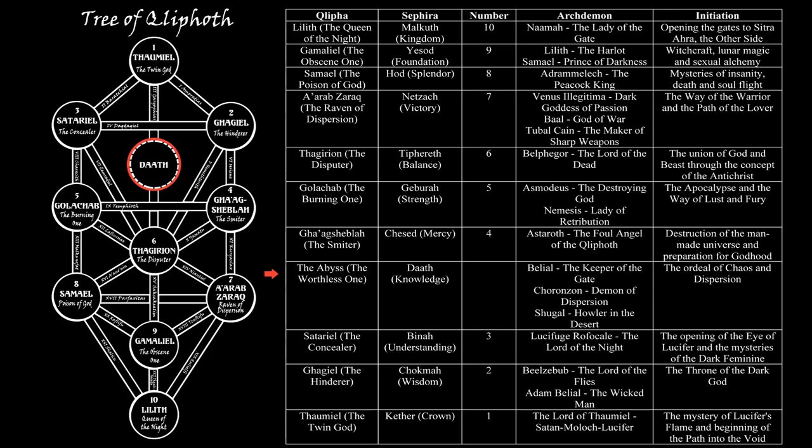While on the Bright Tree this realm is called Da'ath, or Knowledge, here on the Dark Tree it is the Abyss, or the Worthless One, which refers to Belial, who is the Keeper of the Gate, while the Guardians of the Abyss are Choronzon, the Demon of Dispersion, and Shugo, the Howler in the Desert. The initiation of the Abyss is the Ordeal of Chaos and Dispersion.